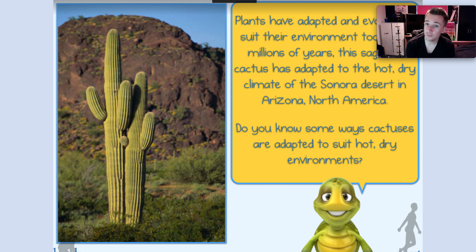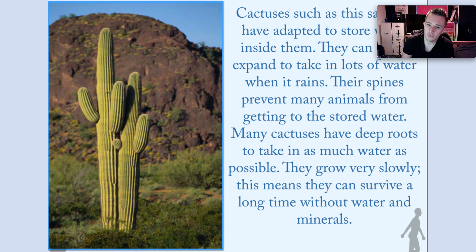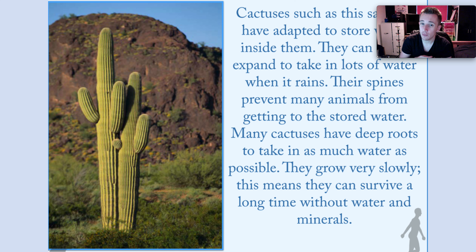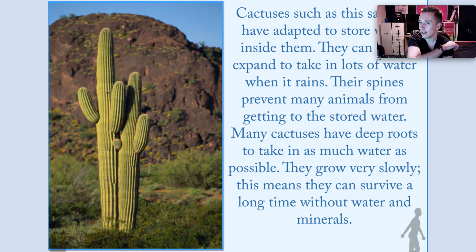Now we look at plants. Plants have adapted and evolved to suit their environment too, over millions of years. This is a cactus adapted to the hot and dry climate of the Sonoran Desert in North America. They've adapted to store water inside them — any water they get, they hold on to it because they may not get some for quite a long time. Their spines are very spiky and that prevents animals from getting to the stored water. And they have deep roots to take in as much water as possible. Not all cactuses originally had these features, but the ones that did were the ones that survived.